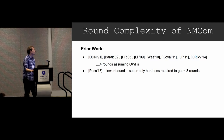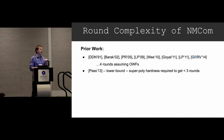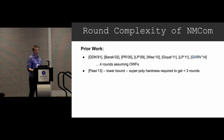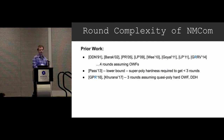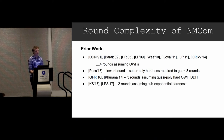We had a lower bound that said you can't do better than three unless you want to make use of super-polynomial hardness assumptions. So five years ago, we were pretty much at this threshold — we had an upper bound of four, a lower bound that said you couldn't get less than three, and the question was: could you get three? Since then, two works have gotten three-round non-malleable commitments.